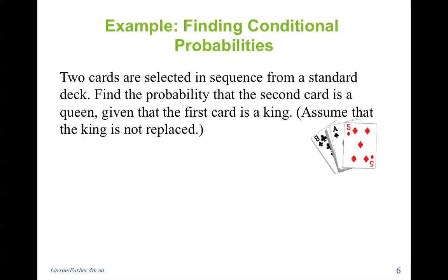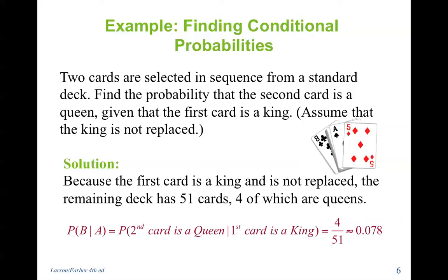Two cards are selected in sequence from a standard deck. Find the probability that the second card is a queen given the first card is a king. Because the first card is a king and is not replaced, the remaining deck has 51 cards, four of which are queens. Therefore, the probability of B given A equals 4 out of 51, which is approximately 0.078.